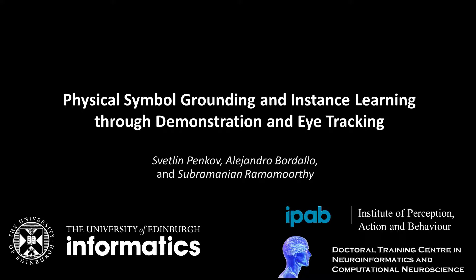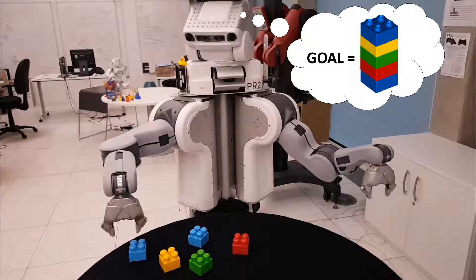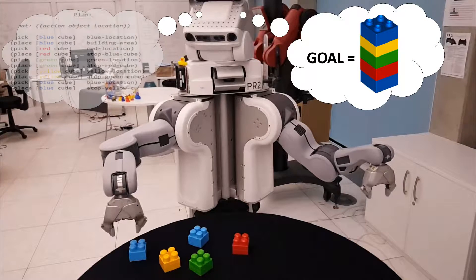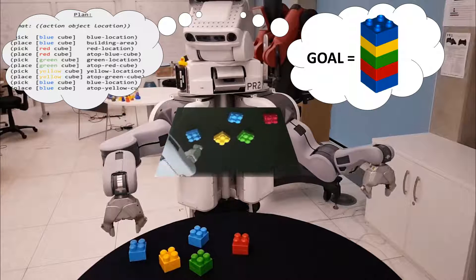It is natural for humans to work with abstract plans which are often an intuitive and concise way to represent a task. However, high-level task descriptions contain symbols and concepts which need to be grounded within the environment if the plan is to be executed by an autonomous robot.